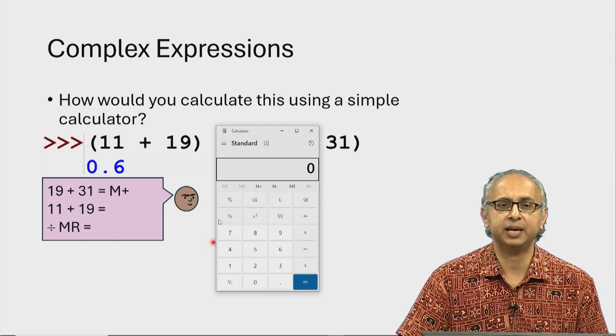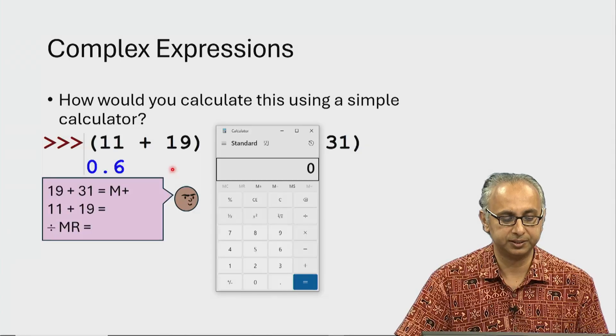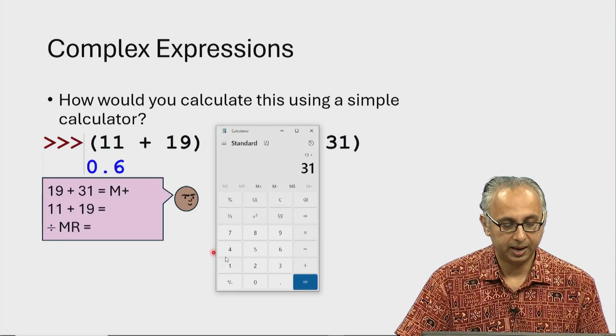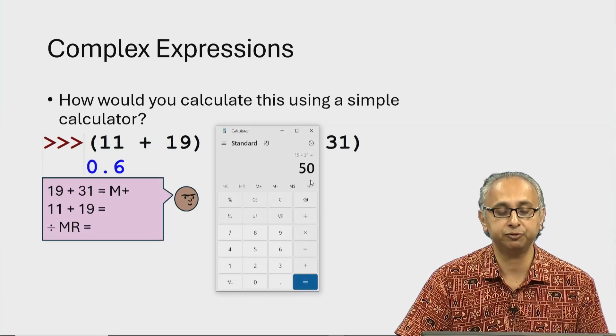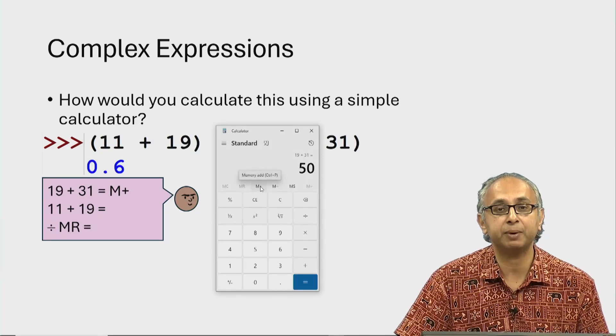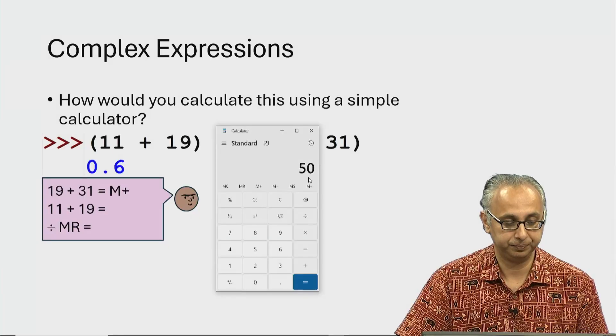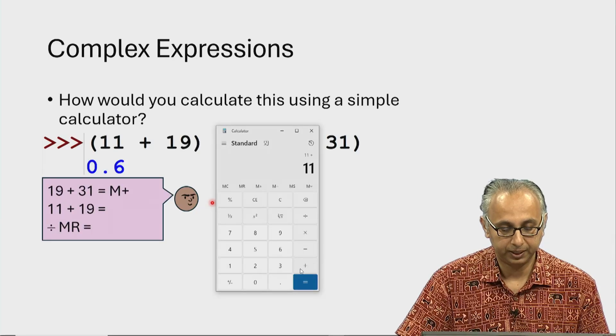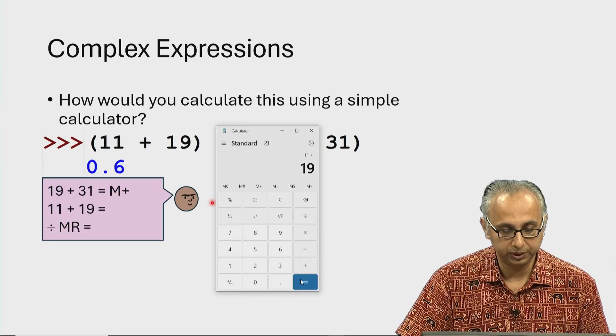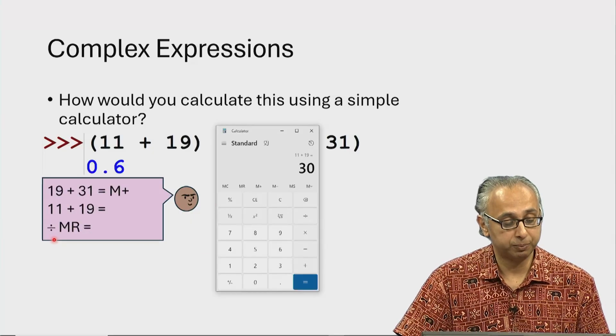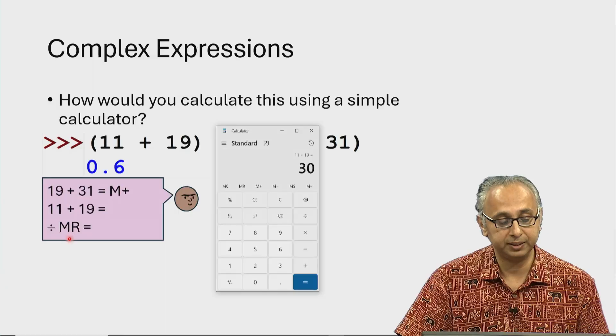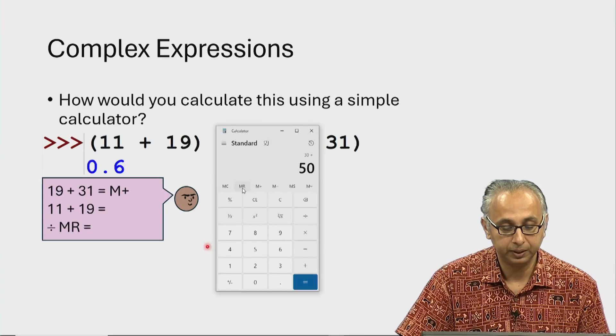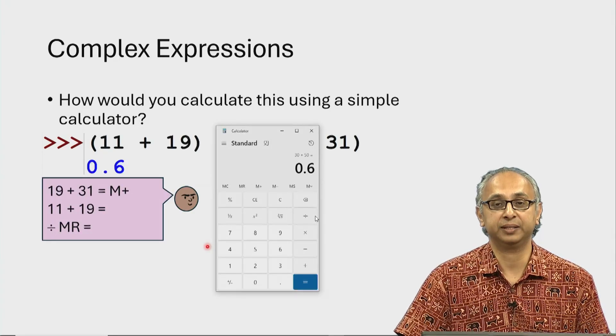So let's follow our friend's steps and see if we get the same answer 0.6. So our friend says we should do 19 plus 31 and then do an equal to. So we press that, so that produces the answer 50 and then save this answer to memory by clicking the memory add or M plus button. Now our friend suggests doing 11 plus 19 which is the numerator. 11 plus 19 equals and that's 30. Now our friend suggests that we press divide and then the memory recall button and then equal to. So we do divide and then memory recall and then equal to and we get the correct answer.